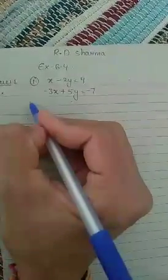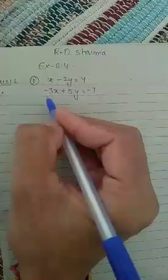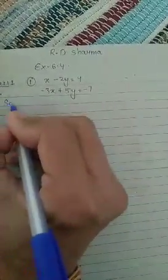So we are finding the value of x and y of these linear equations by Cramer's rule. Solution is: